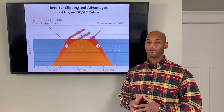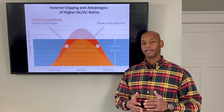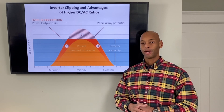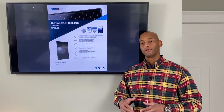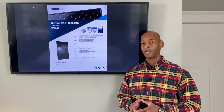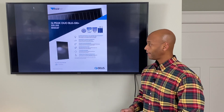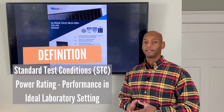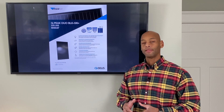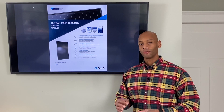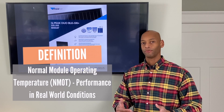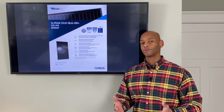Let me explain why we would do that — why pair a solar panel with a higher power rating than what the inverter itself can output in usable power. To understand this, you need to know the two different methods used to rate solar panel power. Those are Standard Test Conditions, or STC — basically ideal laboratory conditions — and NMOT, which stands for Normal Module Operating Temperature, or another way to think of it: real-world conditions. How is the solar panel actually going to perform in the real world?